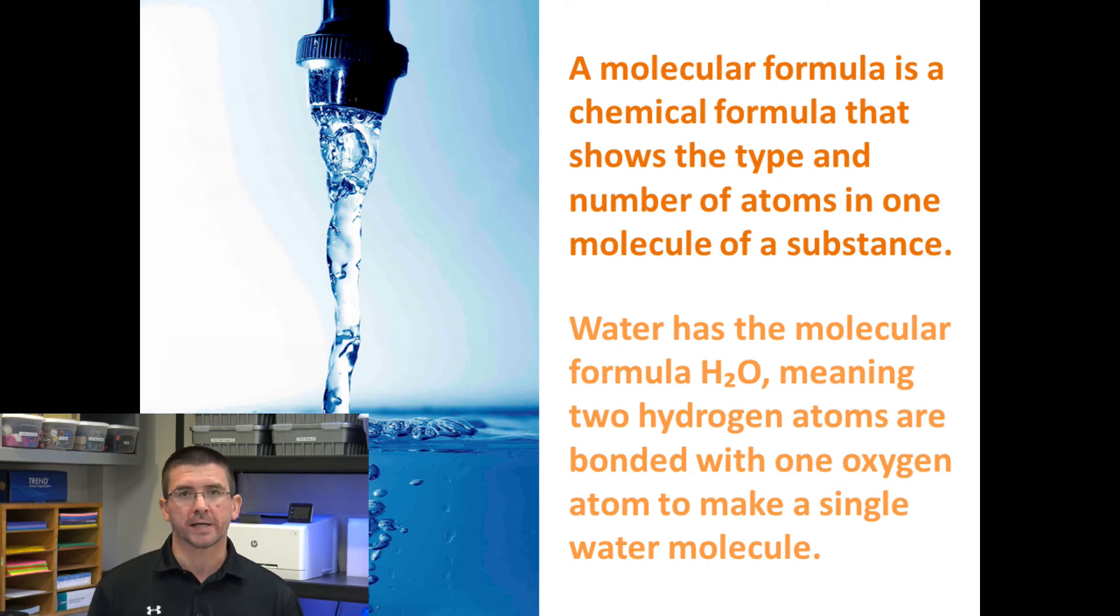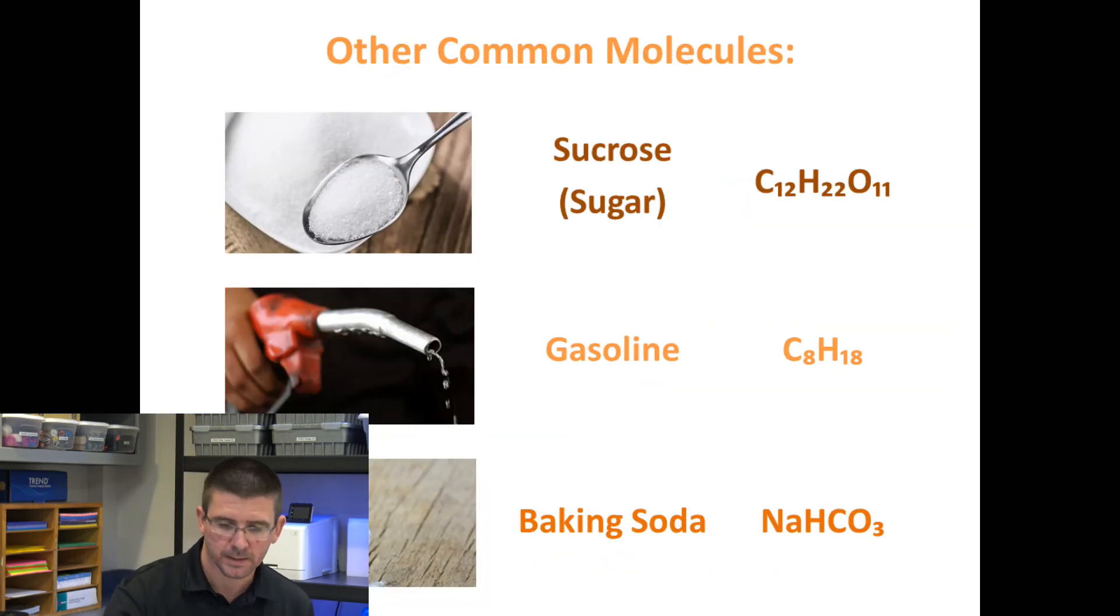If you pulled those atoms apart, you would have the elemental substances, but you wouldn't have the molecule of water anymore. Other examples of common molecules include sucrose, which is our regular table sugar that we use. It's made up of carbon, hydrogen, and oxygen.